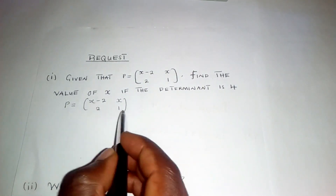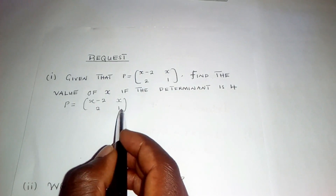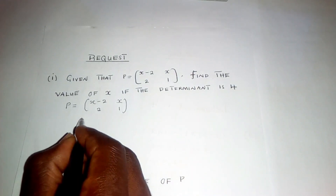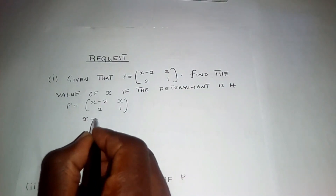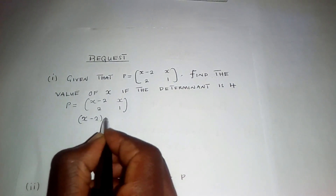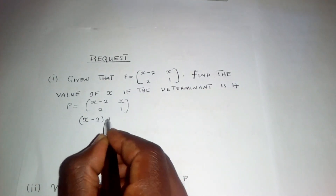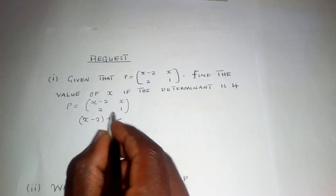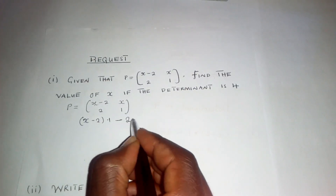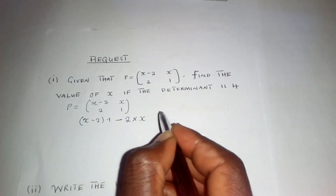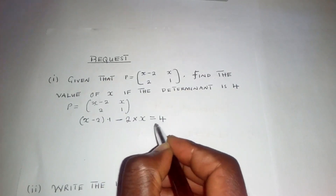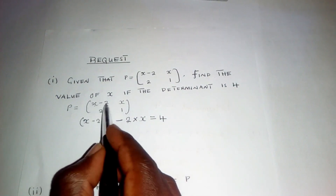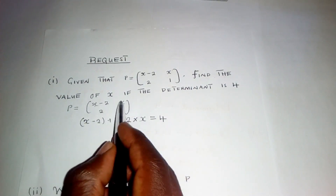We need to multiply the major diagonal and subtract the multiplication of the minor diagonal. So this will be x minus 2 multiplied by 1, minus the multiplication of the minor diagonal, which is 2 times x, which is equal to 4, the determinant. This is the procedure we use when we want to find a determinant — we multiply this by this minus this by this.